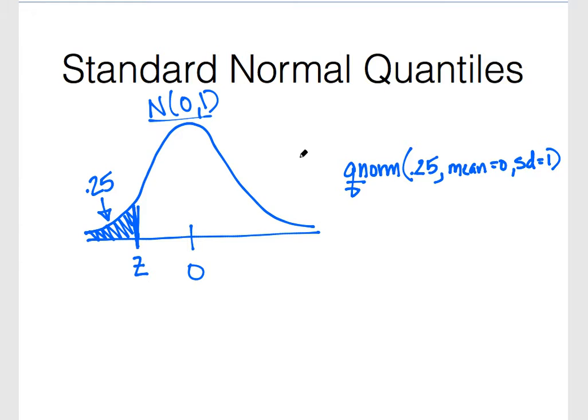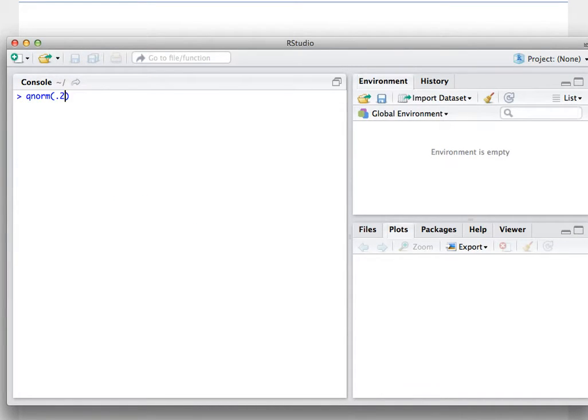So let's go to R and calculate this. We use qnorm, and we're looking for the 0.25 quantile from a standard normal distribution. So we find this to be negative 0.67 or so.